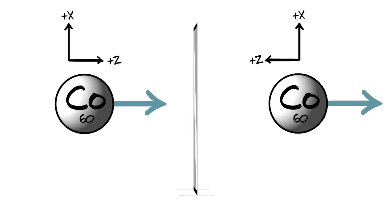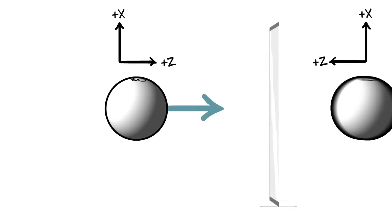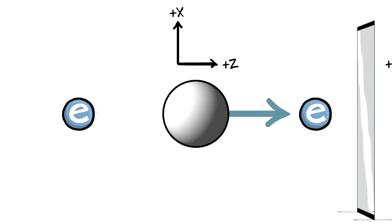Now when a cobalt-60 nucleus decays and emits an electron, that electron could go say to the left or to the right. Now if parity symmetry is respected, the electron should be equally likely to go in any direction. And that way both the normal and mirror image experiments would give the same results.